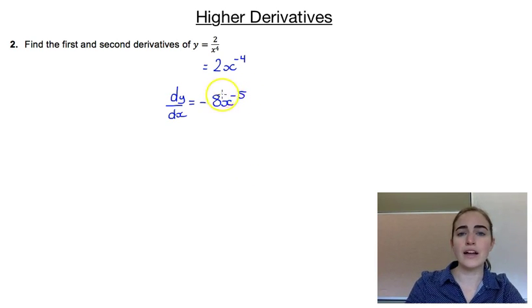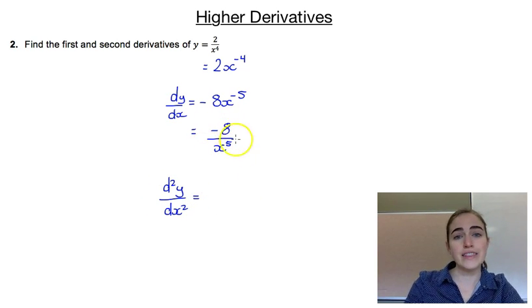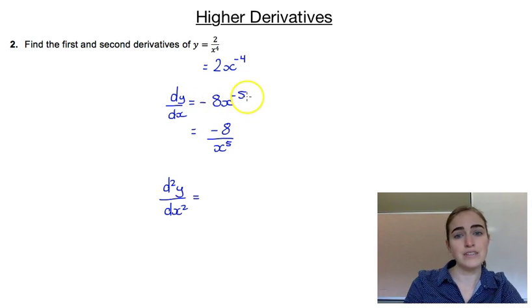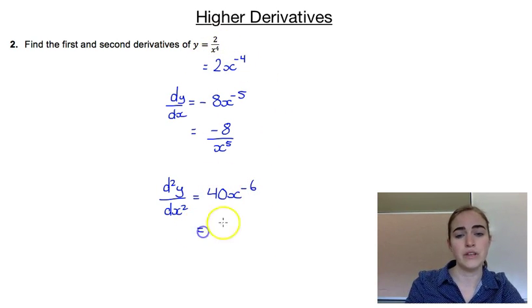We always want to put our derivatives back in the original form, so we'd rewrite that as minus 8 over x to the power of 5. Now to find our second derivative, we're going to differentiate this, but working from the negative exponent form. So minus 5 times minus 8 would give us positive 40, and we'd have x to the power of minus 6. Then again we rewrite that back into its original form, so we would have 40 over x to the power of 6.